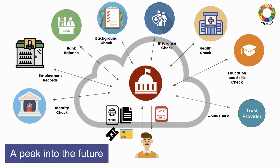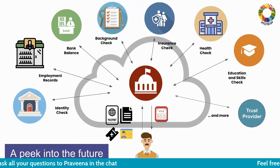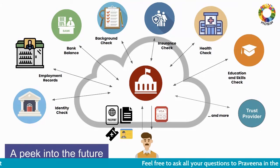In the future, in a connected world where all these can be verified online, we would produce all this information in a digital format and it would all get verified and validated — even services like background checks. This sounds like something in action in many places, but it's all happening in bits and pieces. It's not one seamless process, and the reason is that while this has been visualized long ago, implementing a mechanism where everything works together seamlessly has not been easy.